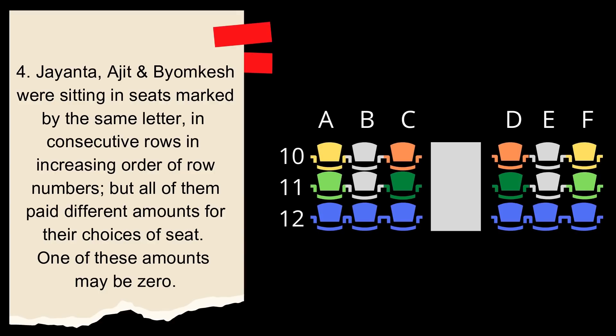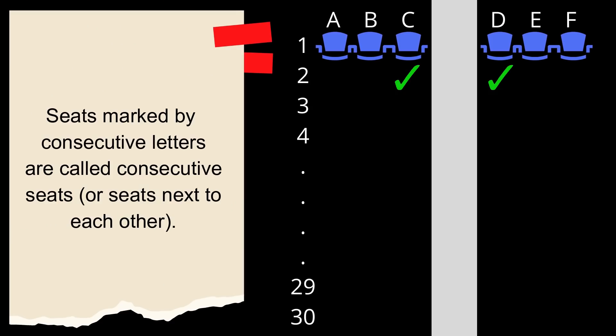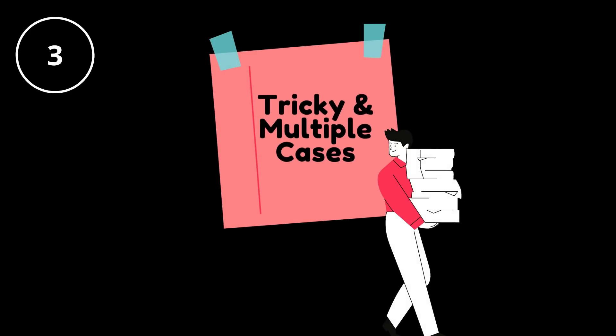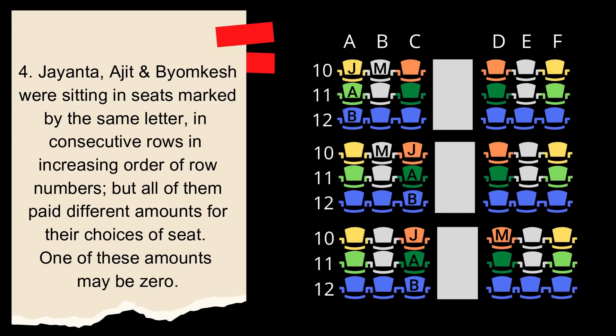We already have another constraint. Constraint number five in which Manik and Jayanta have been mentioned. And Jayanta has also been mentioned in constraint number four. So, there's a linkage that I can draw here. Now I know that M is sitting at a consecutive seat next to J. If Jayanta or J, A, B are sitting at window seats, then the only place where M can be seated is in a middle seat. But if J, A, B are at aisle seats, then there are two possibilities. M could be at a middle seat or M could also be at an aisle seat. Because you remember consecutive seats means C and D as well.